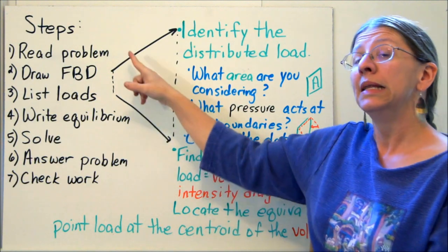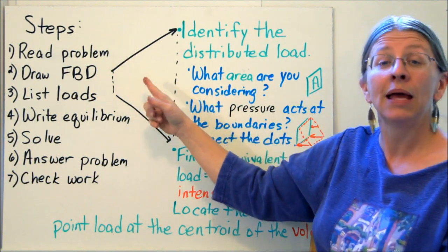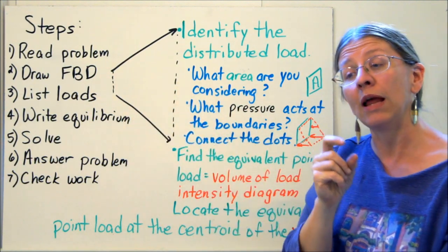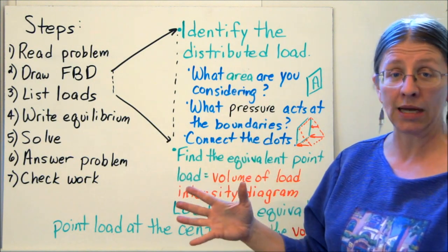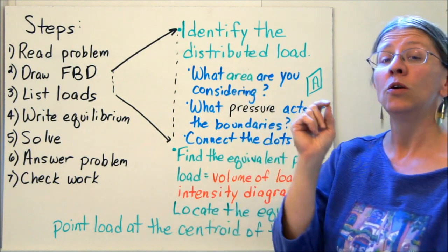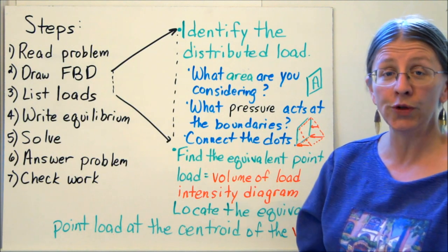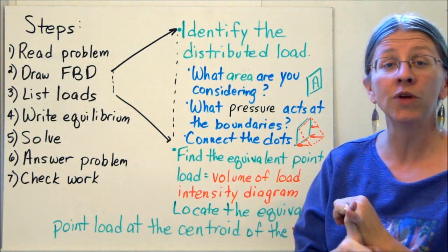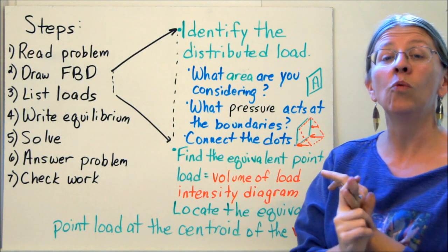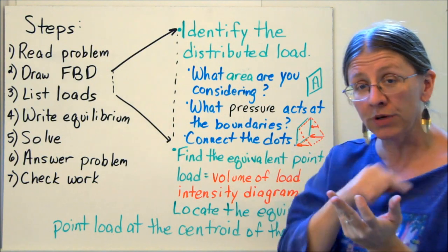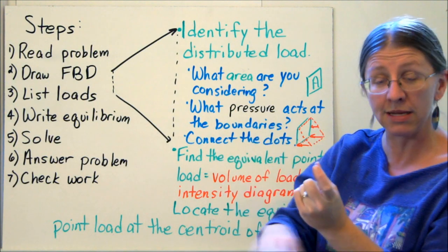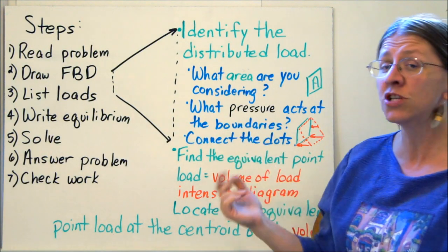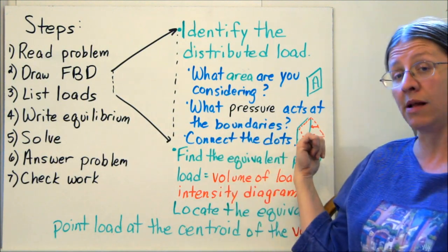When you're finding your free body diagram and identifying your loads for a fluid pressure problem, there are a couple things you need to have in mind. Identify your distributed load. To do that, figure out what area you've got. Figure out what the pressures are at the boundaries around the area. So if you have a rectangular plate, what is it at the top? What is it at the bottom? And then just connect the dots to make your load intensity diagram.